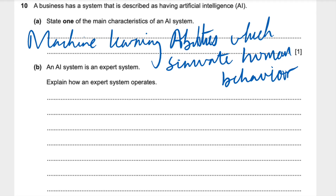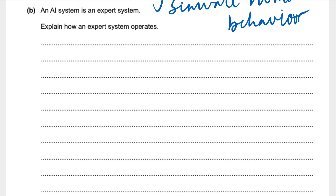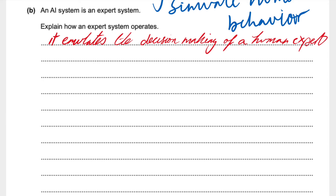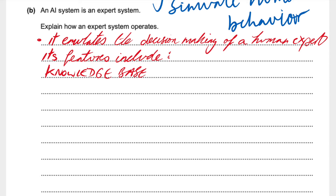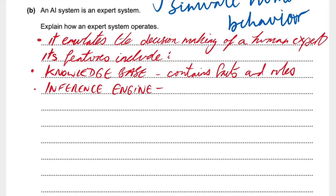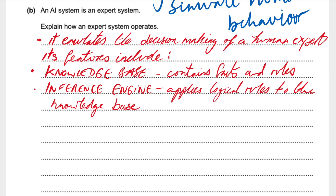Part B: An AI system is an expert system. Explain how an expert system operates. I'll break this down into bullet points with a brief introduction. An expert system is an AI program that emulates the decision making of a human expert. Features include a knowledge base — which contains facts, rules, and information — and an inference engine, which applies logical rules to the knowledge base to derive conclusions.